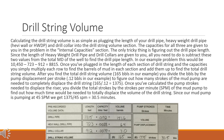After you find the total drill string volume — 165 BBLS in our example — you divide the BBLS by the pump displacement per stroke (0.12 BBLS in our example) to figure out how many strokes of the mud pump are needed to completely displace the drill string: 165 / 0.12 = 1375. Once you've calculated the pump strokes, you divide the total strokes by the strokes per minute (SPM) to find the time needed: since our mud pump is pumping at 45 SPM, we get 1375 / 45 = 30.5 minutes.